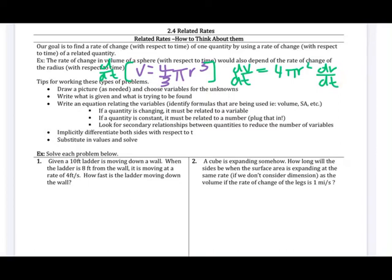Second, write what is given and what is trying to be found. I usually have a spot off to the side noting everything I know that's true all the time and everything true at the instant being discussed. Third, write an equation relating the variables — often a formula like volume, surface area, area of a triangle, area of a rectangle, or the Pythagorean theorem. If a quantity is changing it must be a variable; if it's constant, plug in the number.